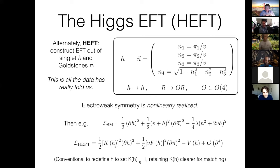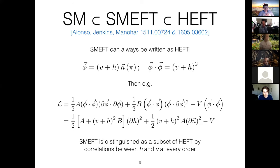In SMEFT, the factors of scale can be made up with some independent scale that determines the breakdown of perturbative unitarity of the EFT. In HEFT, the scale available to you is just the scale v, so anytime you see irrelevant operators, the scale is made up by powers of v. These are our two choices. It's clear that in terms of containment: the standard model is a subset of SMEFT, which itself is a subset of HEFT.